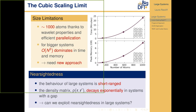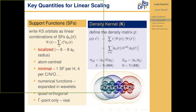One thing that is known is that the behavior of large systems is short-ranged or nearsighted, and in particular the density matrix decays exponentially in systems with a gap. So can we exploit nearsightedness in large systems? The answer is yes. As Thierry already previewed, we can re-express the Kohn-Sham orbitals as a linear combination of support functions, similar to approaches adopted in the ONETEP or CONQUEST codes, which also have a linear scaling approach.